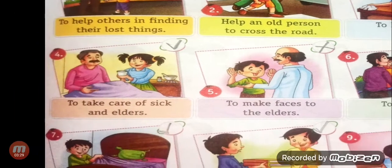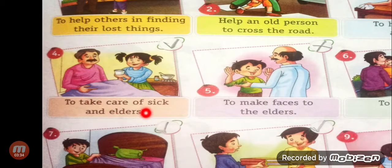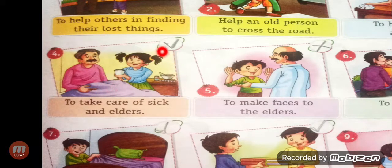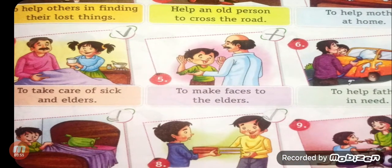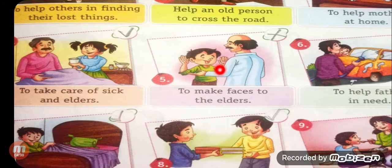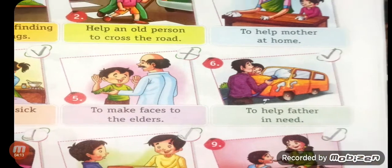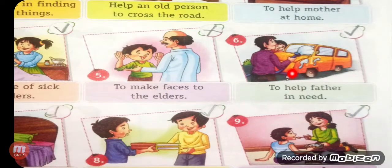Next, number 4: to take care of sick and elders. If anybody is sick at your home and you are helping your elders, it is a very good quality. You are being good to your parents and elders if you are showing these qualities. Put a right sign. Number 5: to make faces to the elders — it is very bad behavior. You are not good to others if you are doing this. Put a cross sign. Number 6: to help father in need — it is a good quality. Put the sign of right.